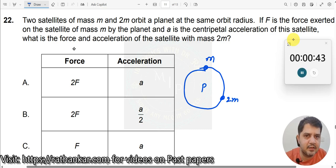F is the force exerted on the satellite of mass M by the planet, and A is the centripetal acceleration of the satellite. So there are force F and centripetal acceleration A.